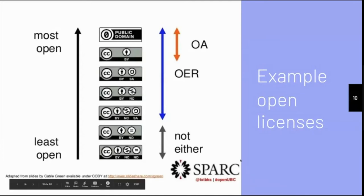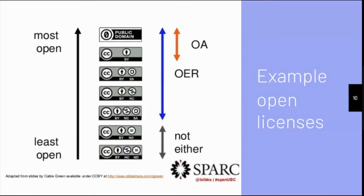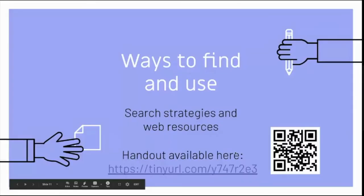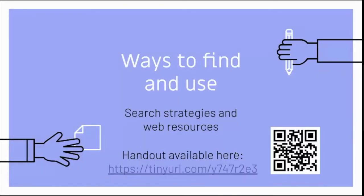A common attribute across these licenses is the BY symbol, which simply means giving credit where credit is due — giving attribution to the folks who have created the resource. So if I was using something by Carrie Merkley, I would CC BY and give credit to Carrie as the creator and author of that resource. Now we're going to turn over to Carrie to see the ways in which you can find and use open educational resources for your own purposes.